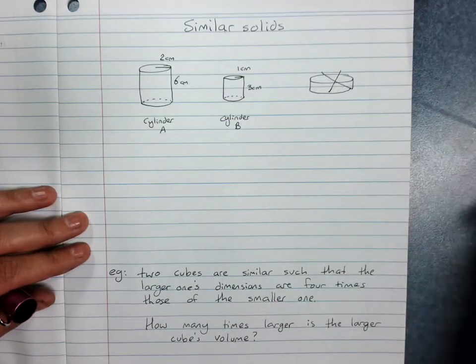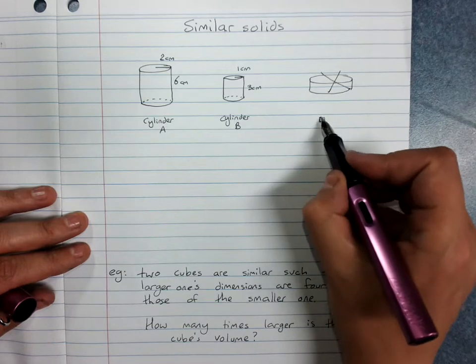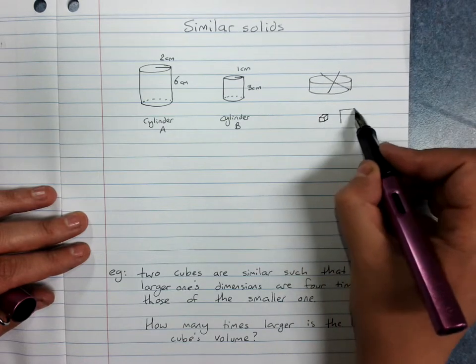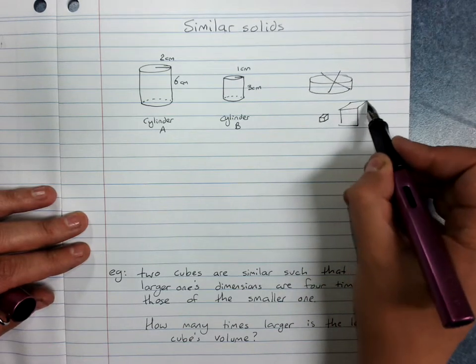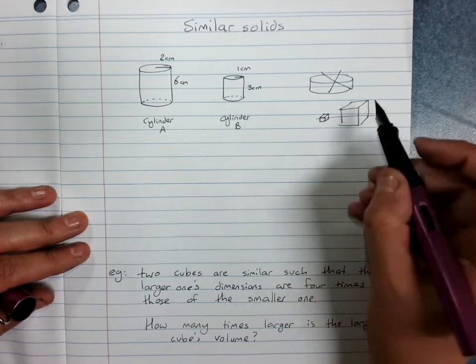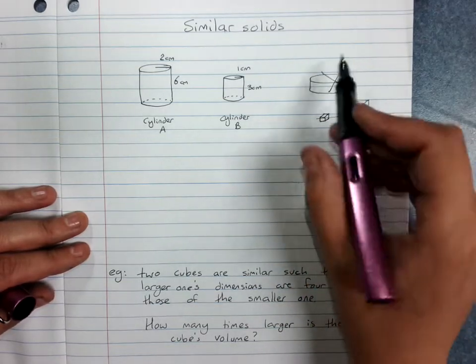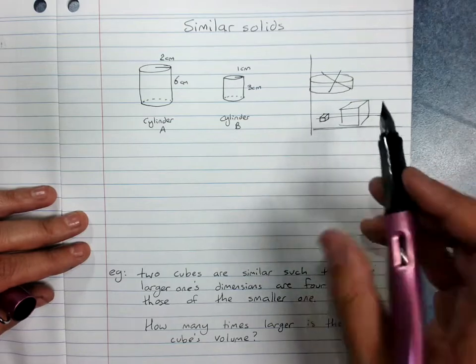Some shapes are always similar, so any cube is always going to be similar to any other cube, and the same for spheres. Just a little aside there. I thought I'd mention that.